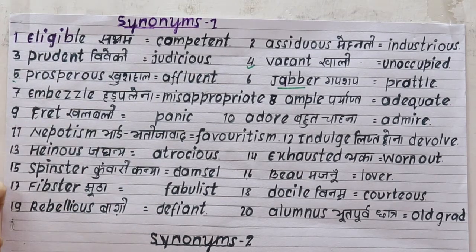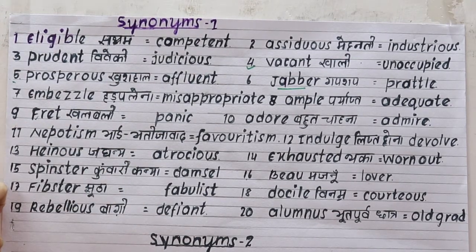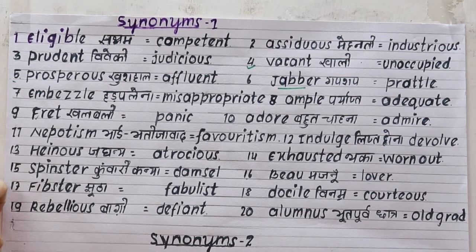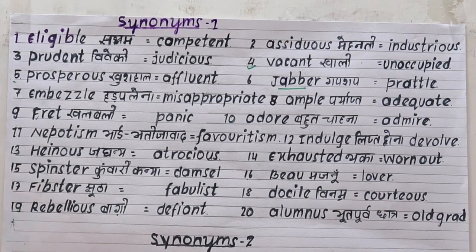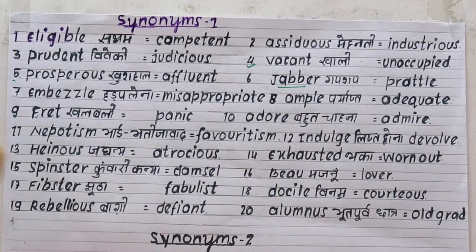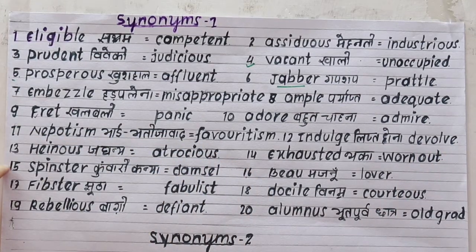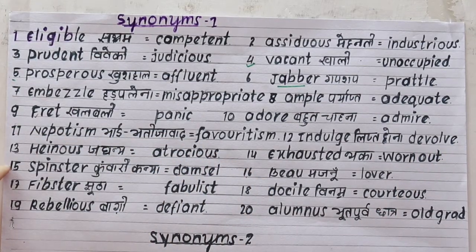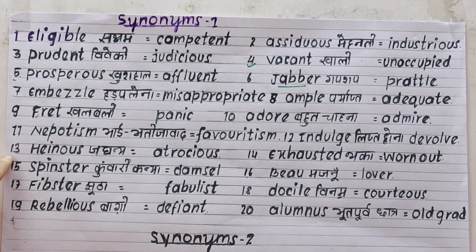The synonym for 'indolent' is 'devolved' or idle. Number thirteen relates to someone who is a genius.